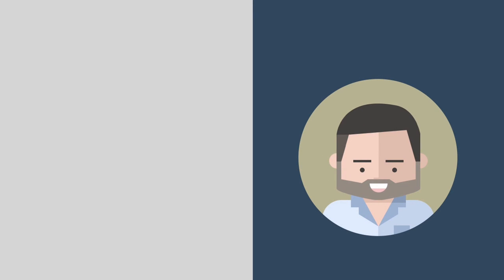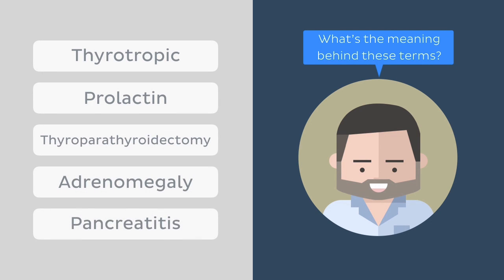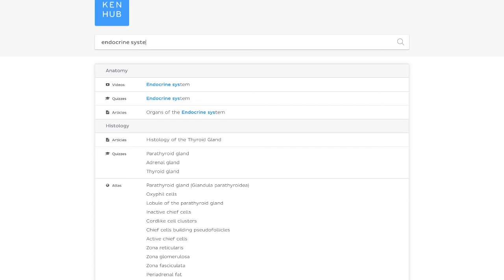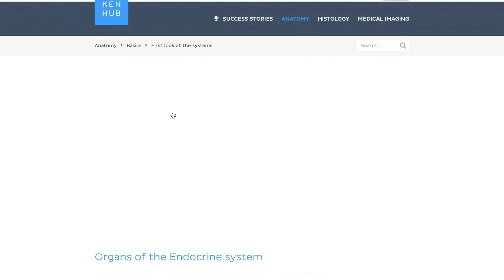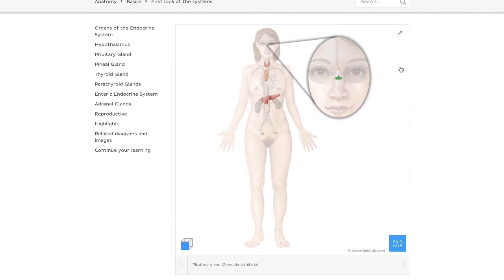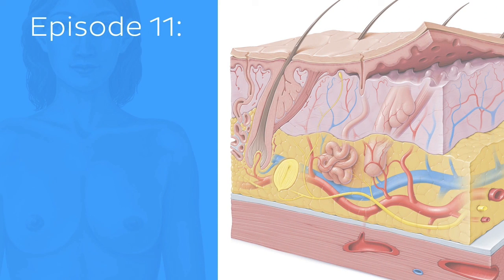And that marks the end of all the terminology we wanted to teach you in this video. Now, why don't you put all this fresh knowledge to the test and try to figure out what the following terms mean? Let us know your answers in the comments below. And although this tutorial might be over, don't let that put a stop to your learning. Deepen your anatomical knowledge over on kenhub.com with the help of our articles and beautiful illustrations. Don't forget to subscribe to this channel if you want to see more videos. See you in the next installment of our series where we'll cover the integumentary system.